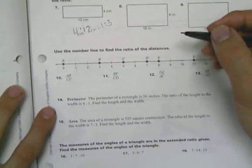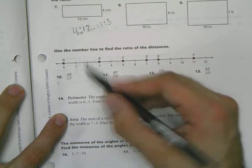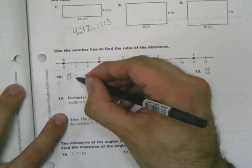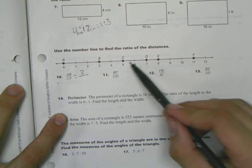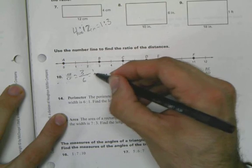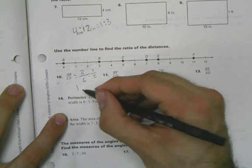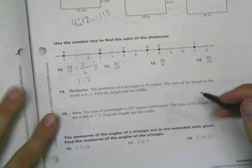Now this next one here is going to be number 10. AB over CF. So AB is 1, 2, 3. So we have that equals 3 over CF which is 1, 2, 3, 4, 5, 6. Which is the same thing as 1 half. You could say that that was 1 to 2.